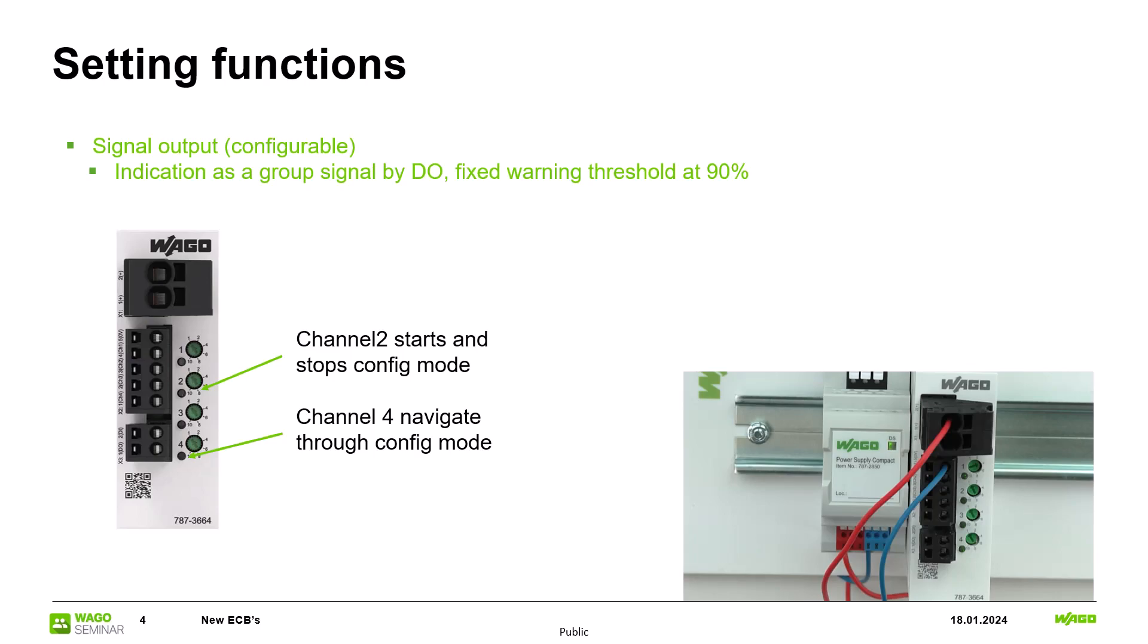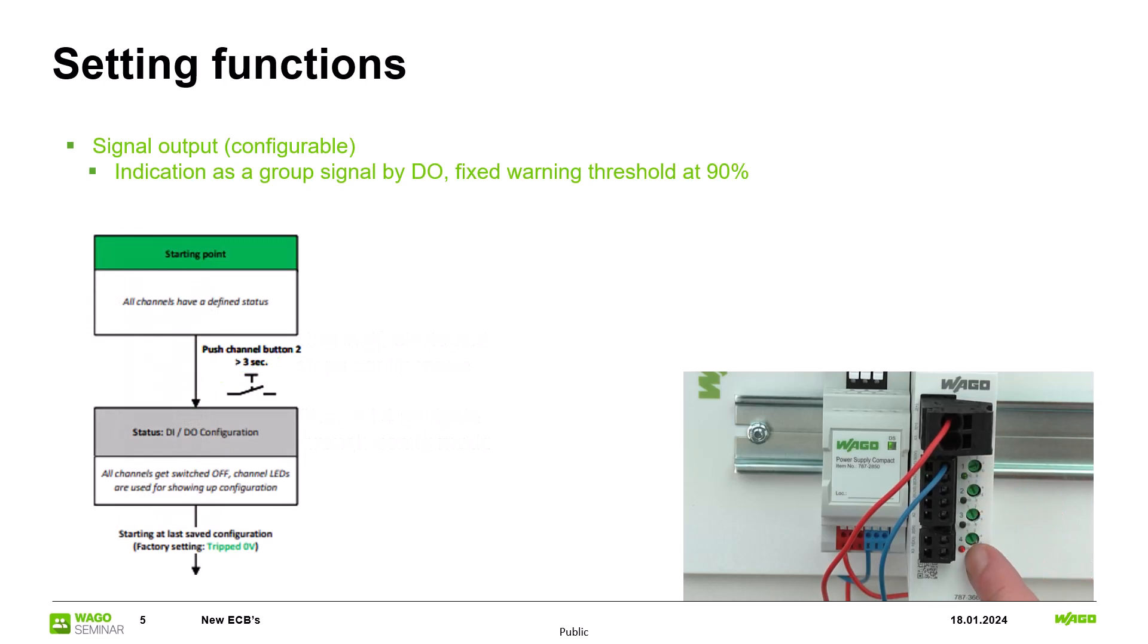To start the configuration press the button for channel number 2 for at least three seconds. All channels are now switched off and you can go now through the different modes. You see that the channel number 4 is flashing red and green. The channels 1, 2 and 3 show you the different modes.